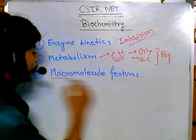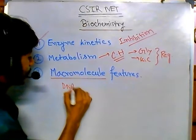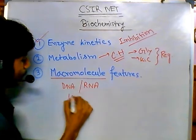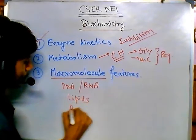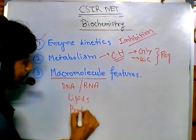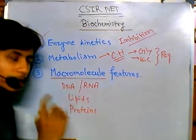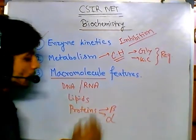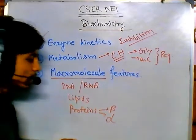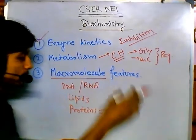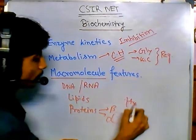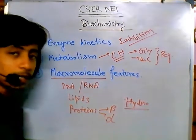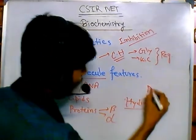From macromolecules, you need to know the structure of DNA, RNA, lipids, and proteins. These are very very important. Especially the different varieties of proteins like beta sheets and alpha helix — their features, which amino acids are present more in alpha helices versus beta sheets, what is hydrophobic, what is hydrophilic.